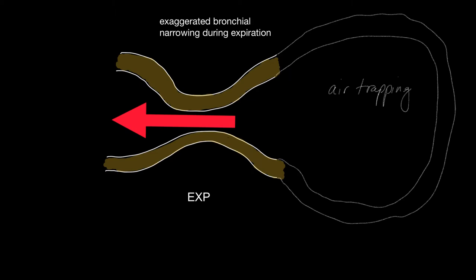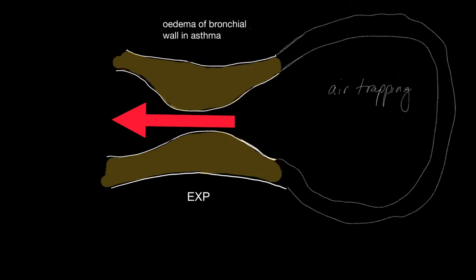One of the problems with prolonged exaggerated bronchial narrowing during expiration is the development of air trapping, which you can see here. This can be seen with the bronchial wall edema seen in asthma.